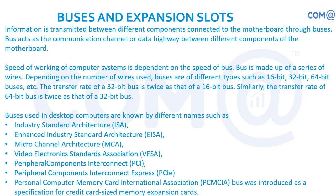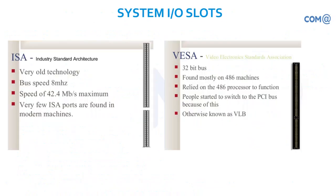Next are buses and expansion slots. Many slots are provided on the motherboard so you can insert add-on cards such as a wireless network card, Ethernet card, display card, or sound card. The difference between slot types is the number of bits provisioned. It started with ISA at 8-bit, then 16-bit, 32-bit, and 64-bit, matching the address and data bus width of the system.